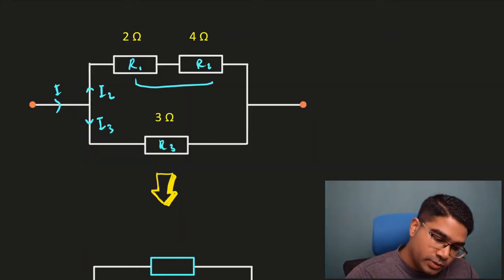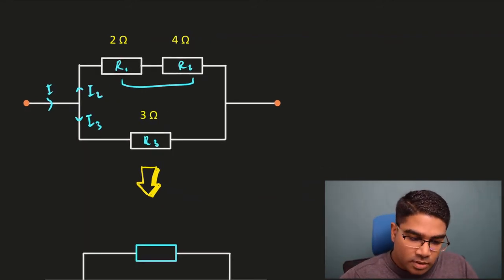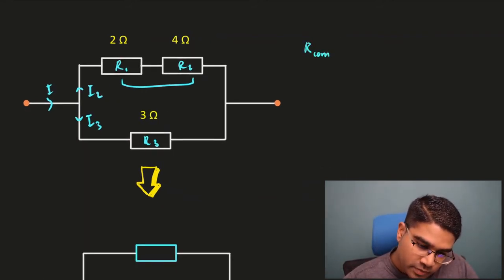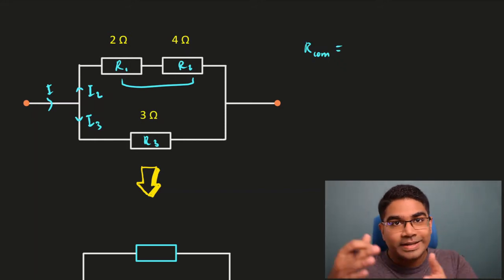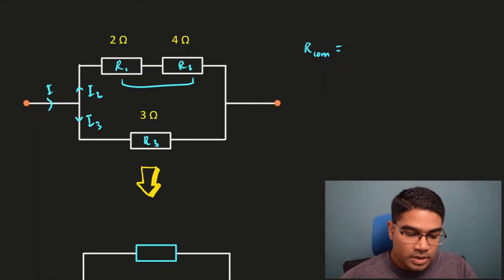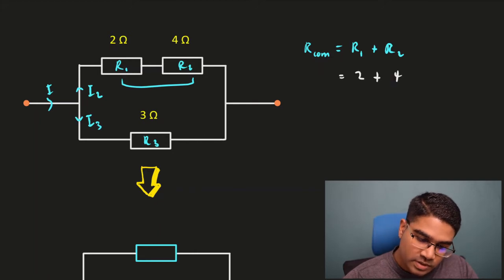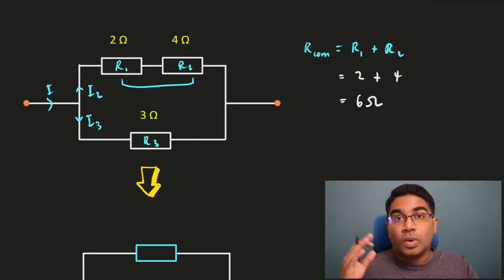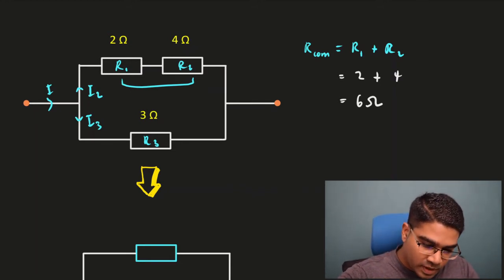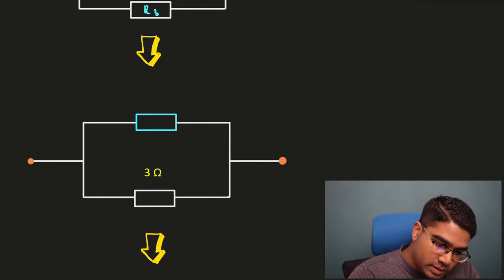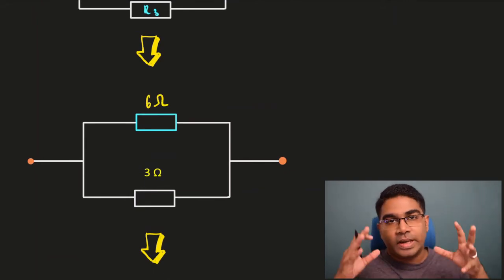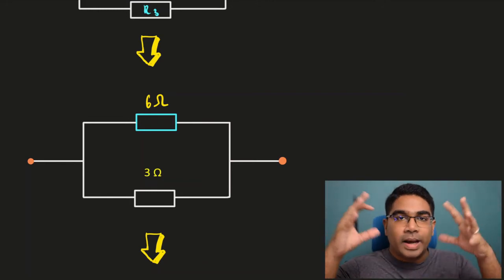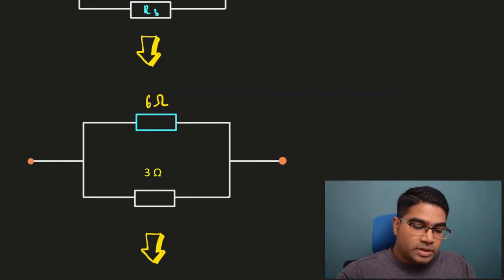We always tackle the resistors connected in series first — we simplify that first. So let's combine R1 and R2. The combined resistance for R1 and R2, since they are connected in series, is simply R1 plus R2. The value of this is 2 plus 4, which equals 6 ohms. This has now become 6 ohms, representing those two resistors as a single value.